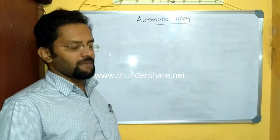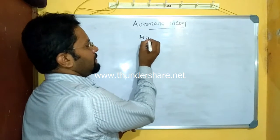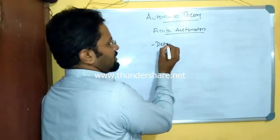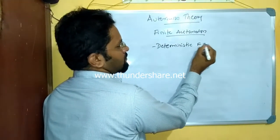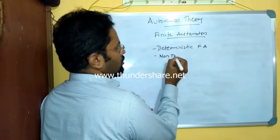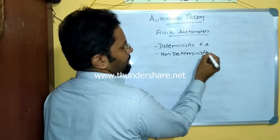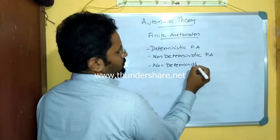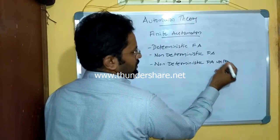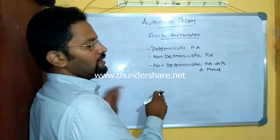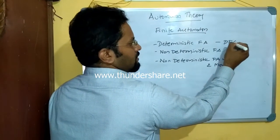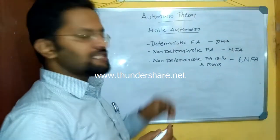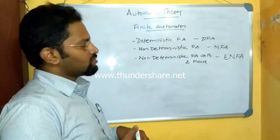As I have already mentioned in my previous sessions, finite automata are of three types: one is deterministic finite automata, second is non-deterministic finite automata, and third is finite automata with epsilon moves or epsilon transitions. Deterministic finite automata is also called DFA, the second is called NFA, and the third we call epsilon-NFA.